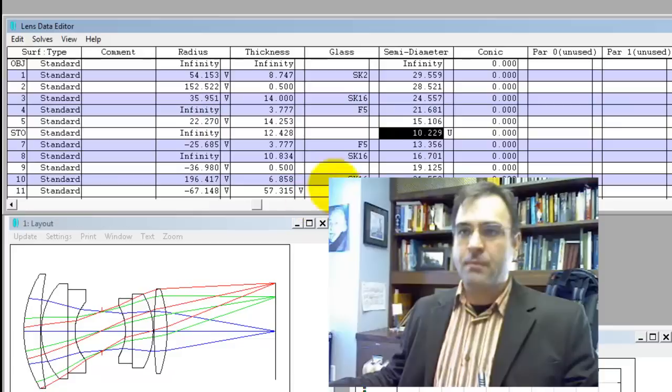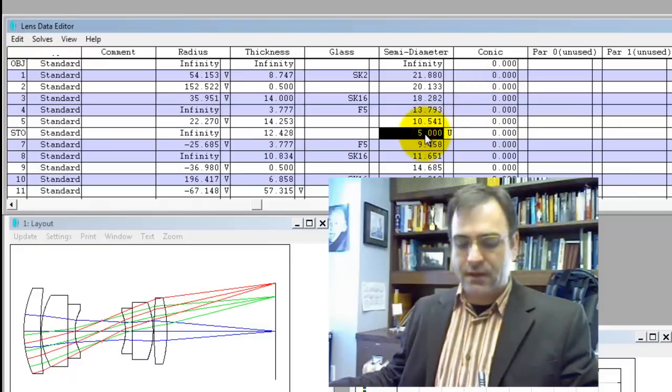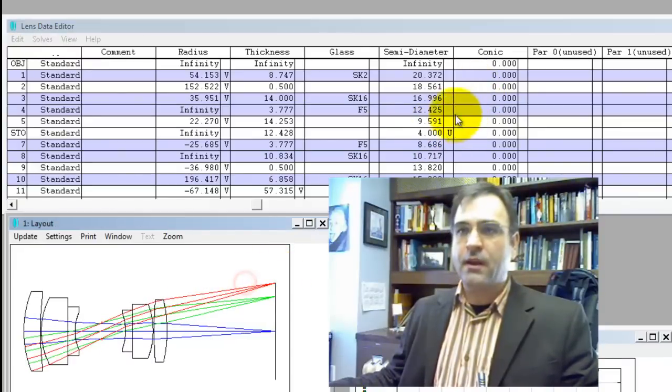You can have float by stop size. And if we want to adjust the F number, we can come in and say five. I'll update this and it varies the working F number.